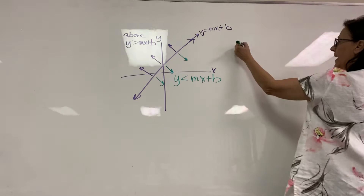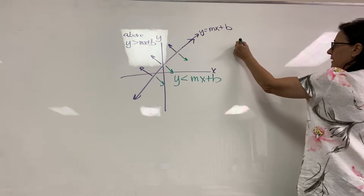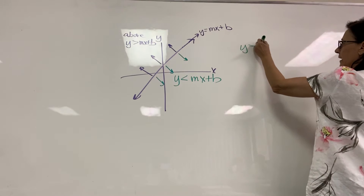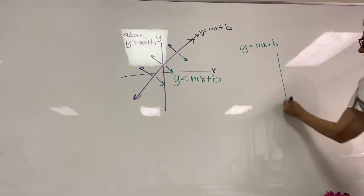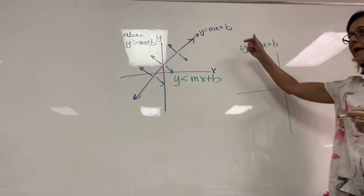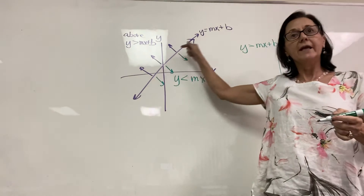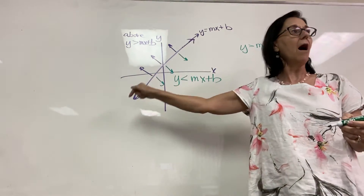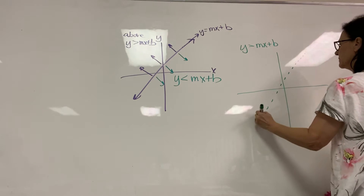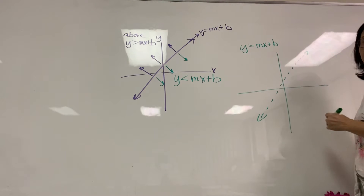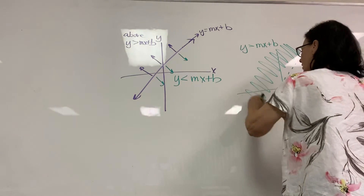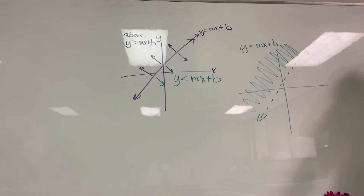If I had an equation that was y greater than mx plus b and I graphed it, my line would not be a solid line. The way you indicate that the solution set is not on the line is you draw a hyphenated line, and then you shade all of the area above the line.